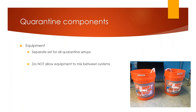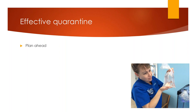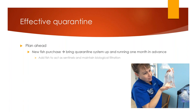Now on to our most important chapter — how to effectively use a quarantine system. First, always plan ahead, especially when adding new fish to your pond. If you know you're going to be purchasing fish within the next month, get your quarantine system up and running to make sure your biological filtration is all happy and good to go. You're going to need to add fish to this system to act as sentinels and maintain biological filtration. The time to set up, especially with nitrogen cycles, can be shortened by using pre-established media, especially if the species are the same as in your main pond.